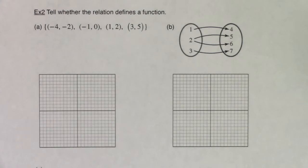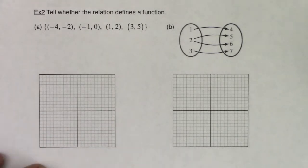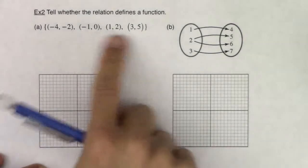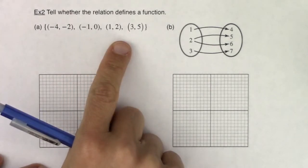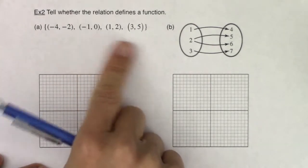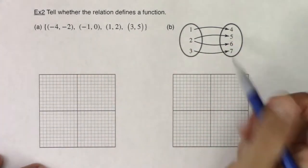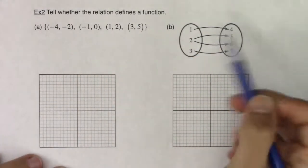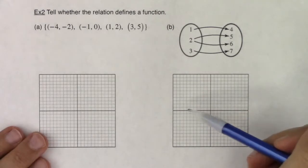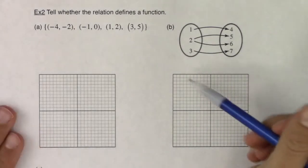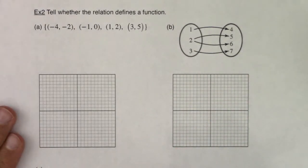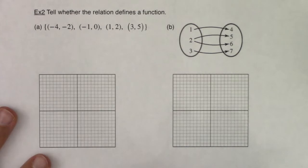Okay, Math 31. Let's take a look at a few more relations just presented in different formats. We'll do one that's familiar — a list of ordered pairs — then we have a visual, and there's also a little table in part C that we'll take a look at.